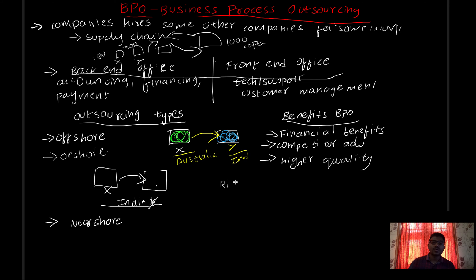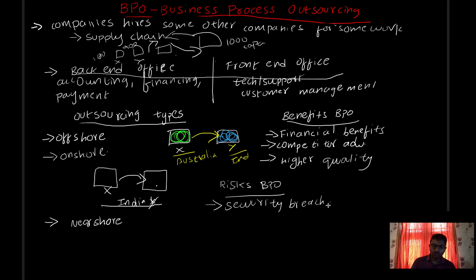Now there are risks of BPO. If a company outsources to other companies, there are risks that exist. One critical risk is a security breach. For example, if you share data with a trusted company, they can access your personal information, credit card information, salary, etc. There is a risk that your data can be compromised. However, this risk is relatively less compared to the many benefits. So that is why companies outsource — there are many benefits and some risks. This is BPO.